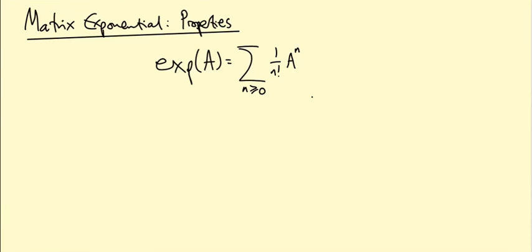In the last video, we introduced the matrix exponential, which was the sum from n equals 0 to infinity of 1 over n factorial A to the n, where we understand A to the 0 to mean the identity matrix. In this video, we're going to prove some properties that this function has.